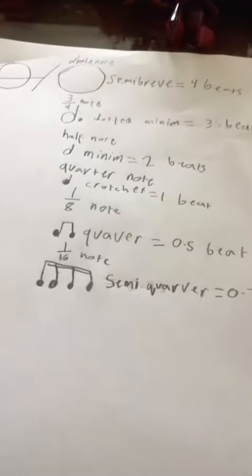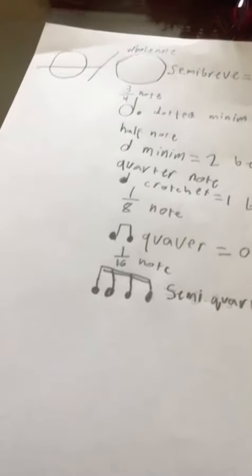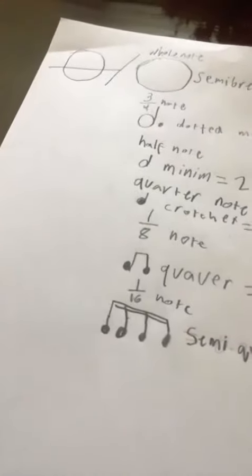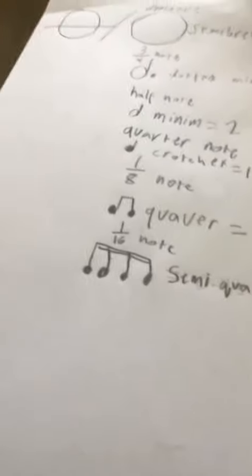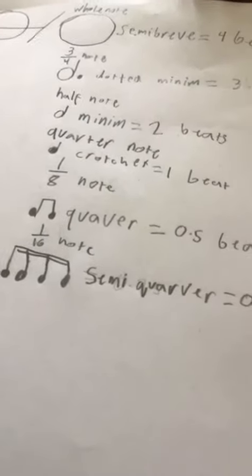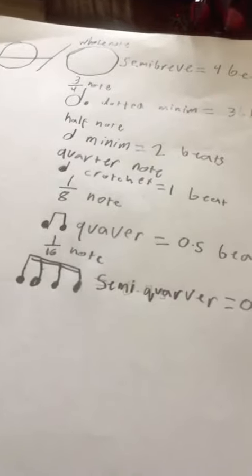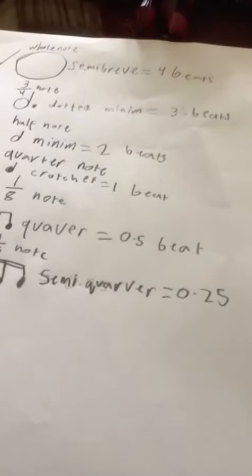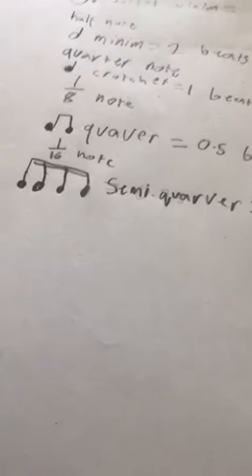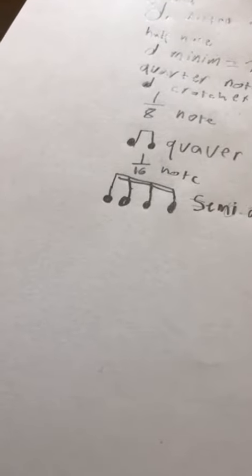If it has a line then it means D or middle C, but if it's without a line then that means it's any other note, and it equals four beats.